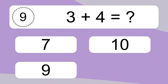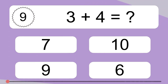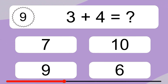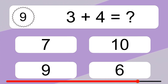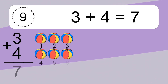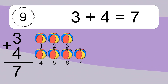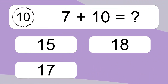3 plus 4 equals what? 3 plus 4 equals 7. Let's count it: 1, 2, 3, 4, 5, 6, 7.